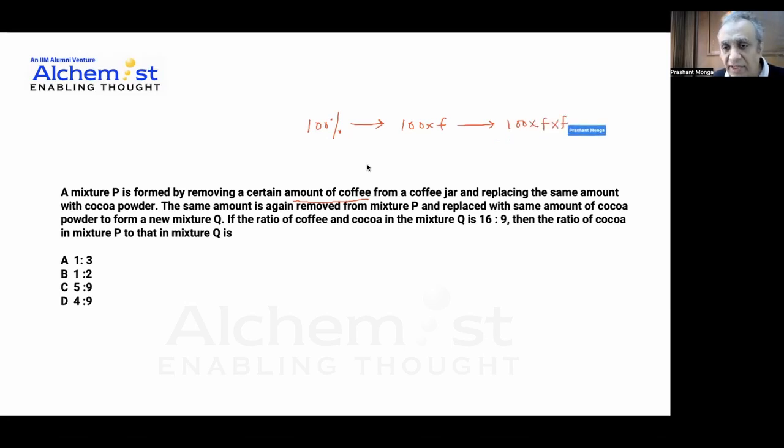So after two steps, we know we are left with 16 by 25 of coffee, which is equal to 64%. So this means that f is equal to 0.8 or 80%, since 64% is equal to 100 into f square.